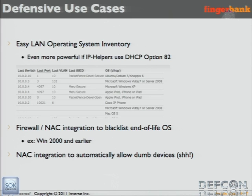You can do firewall and network access control integration to blacklist end-of-life stuff, for example, or even Backtrack or Linux if you want. We use that in PacketFence a lot — to automatically register VoIP devices and printers so users don't have to do it themselves. I know it's a security problem because we're relying on client-side stuff to actually behave on the network, but it's a usability problem too — someone has a choice to make.